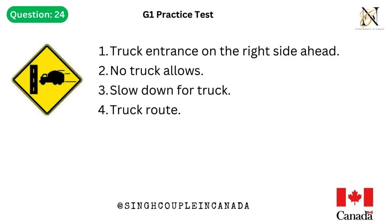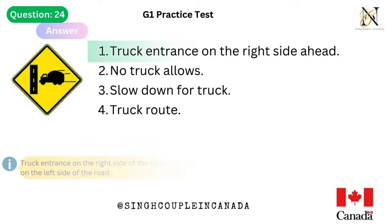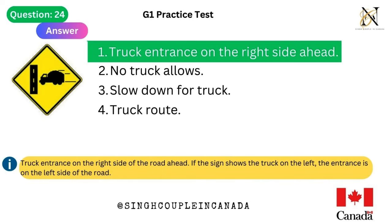Question 24. This traffic sign means: 1. Truck entrance on the right side ahead. 2. No truck allowed. 3. Slow down for truck. 4. Truck route. Answer is 1. Truck entrance on the right side ahead. If the sign shows the truck on the left, the entrance is on the left side of the road.